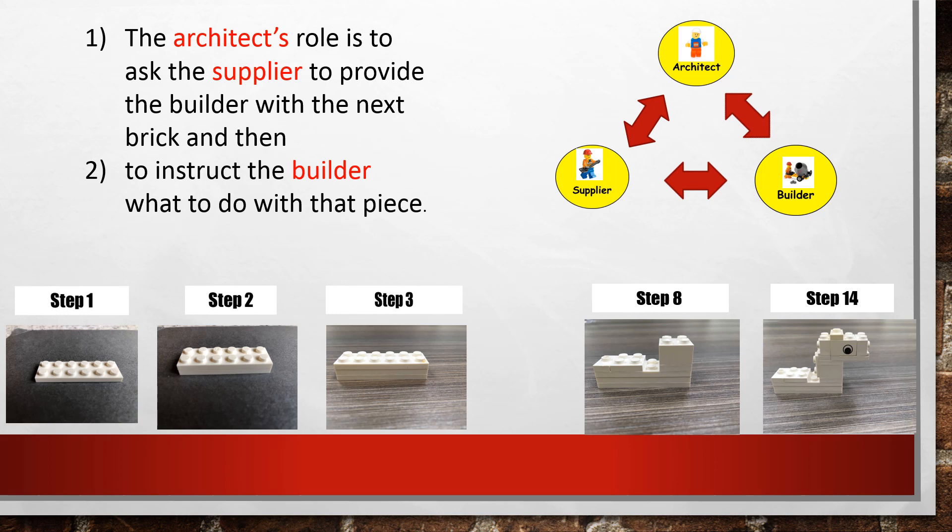Using the unicorn as an example: in step one, the first piece needed is a flat white twelve-dot piece, so the architect asks the supplier to find this piece. The supplier finds it and hands it to the builder. In step two, the architect asks the supplier to find the second piece; the supplier hands it to the builder, who then awaits the instruction from the architect about where the piece needs to go — in this case, simply on top of the first piece. As the build progresses in complexity, so do the language demands.